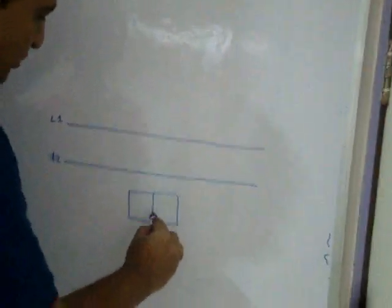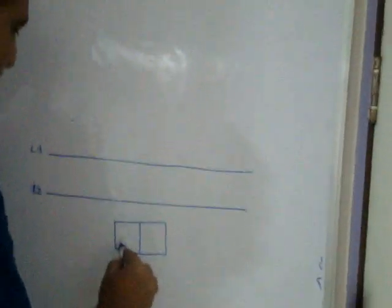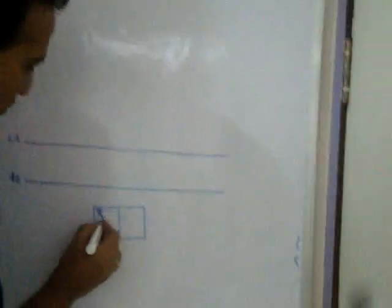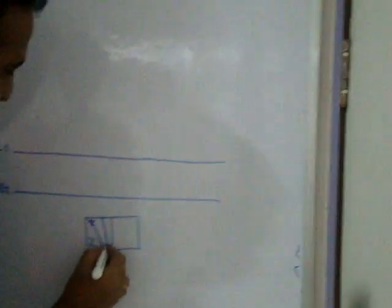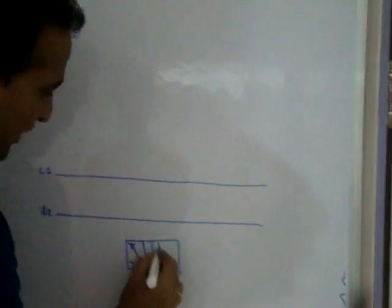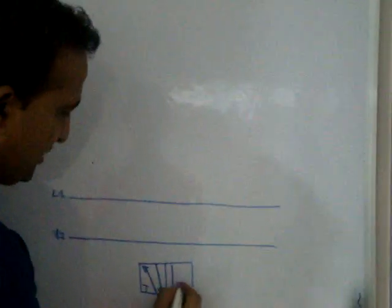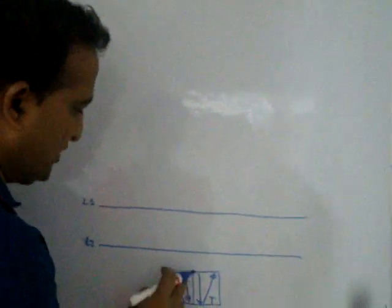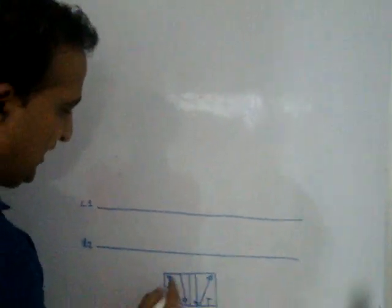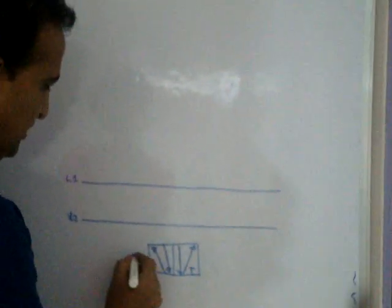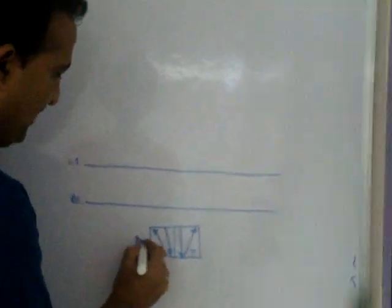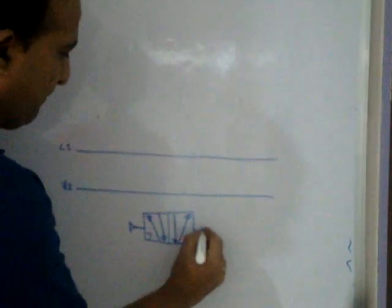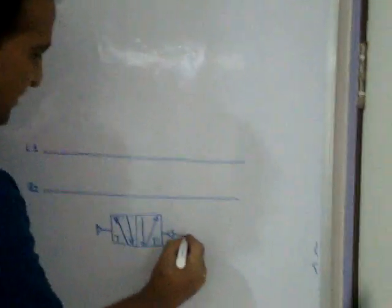A 5/2 valve means 5 ports and 2 positions. This is the first position, this is the second position. To operate this by pilot — pilot one — meaning to switch this position, one more valve is used.